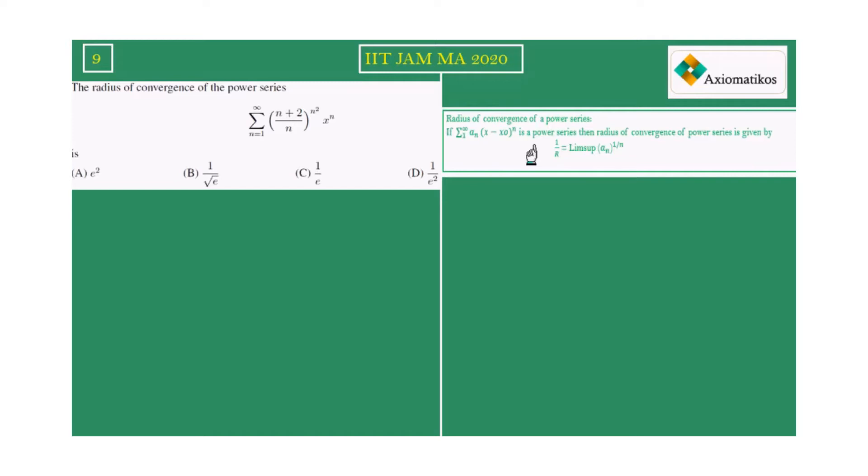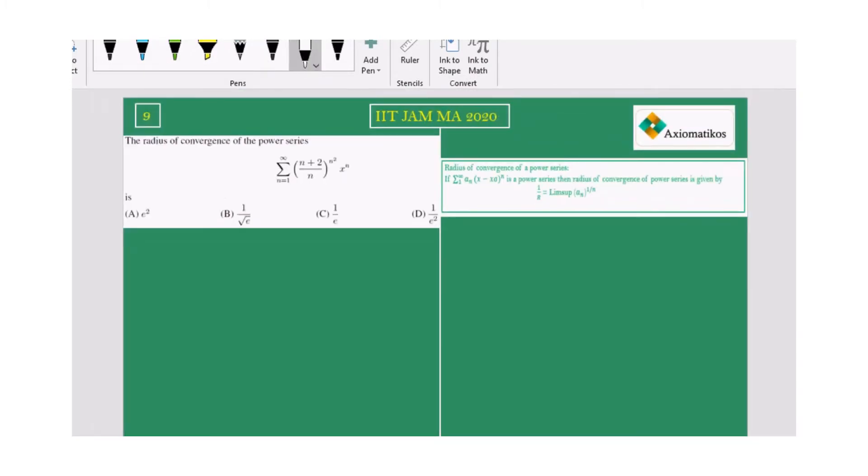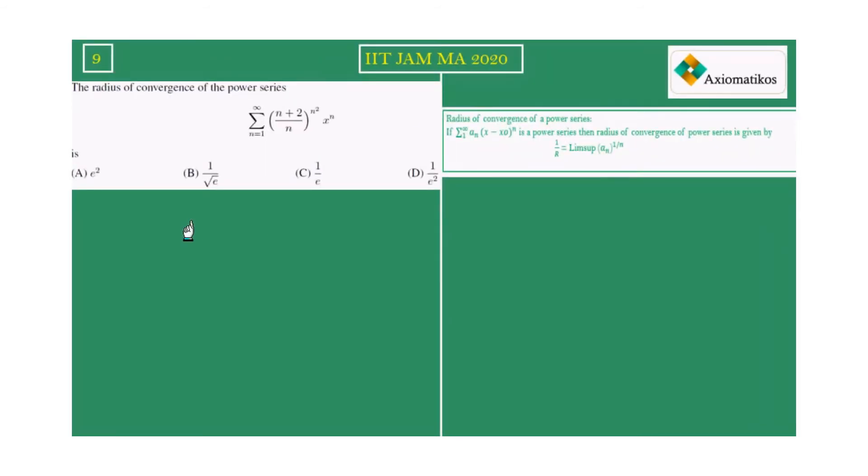So let me use the power series. Now see what we have. We have this power series: (n+2)/n to the power n² times x to the power n. So this is our power series.